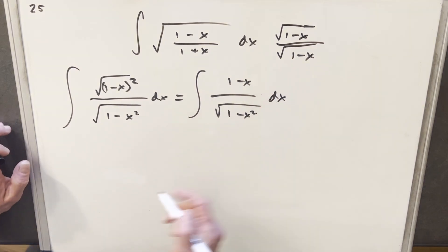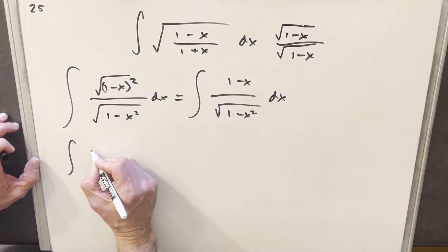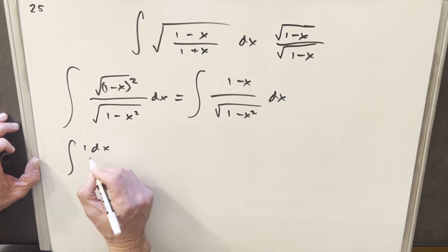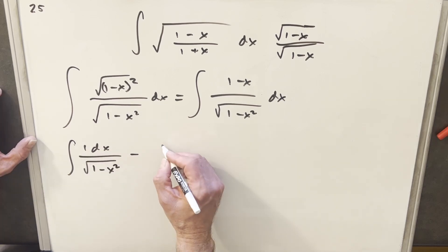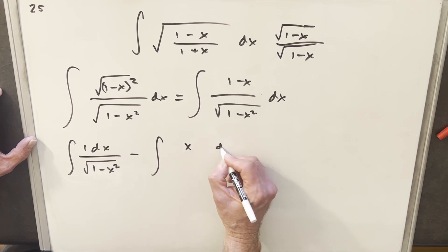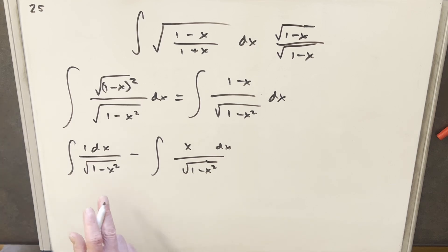Then from here, all we're going to do is break this into two integrals. So the first one will have our 1 dx over square root of 1 minus x squared. And then for the second one, we're going to have our x dx over square root of 1 minus x squared. Now this first one's easy, this is actually arcsine. So we'll focus on this other integral.